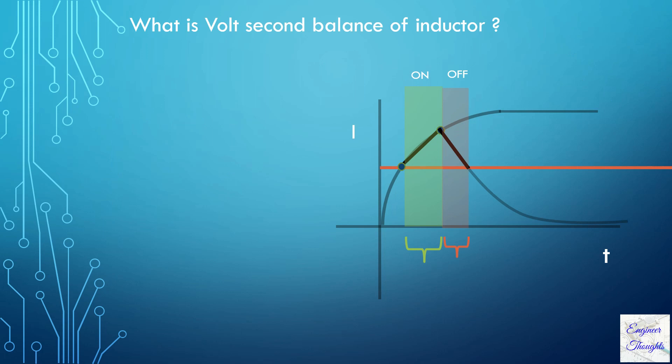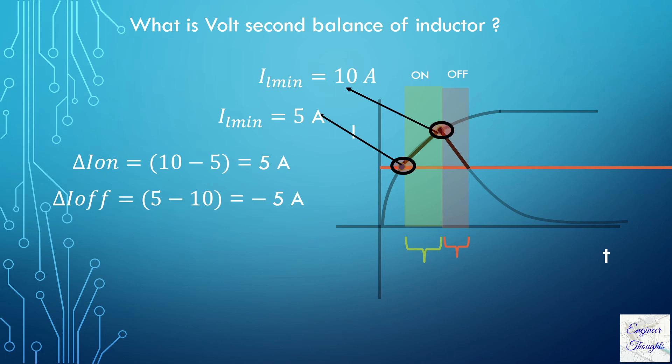Thus, to ensure the starting and ending points of the inductor is the same, let us take an example. Let I_Lmin equal 5 amps and I_Lmax be 10 amps. Thus, the change in inductor current during the turn-on time is 10 minus 5, which is 5 amps.